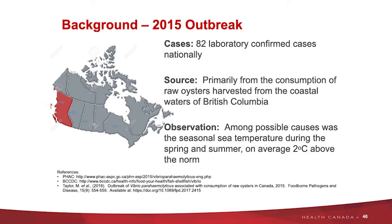However, in 2015, we had a fairly large outbreak. Canada is a very large country — over 202,000 kilometres of coastline — with British Columbia having about 37,500 kilometres of coastline. We had 82 lab-confirmed illnesses, primarily from domestic sources, from raw oysters harvested in the coastal waters of British Columbia. It was a significant and unusual year — average temperature was two degrees above normal.